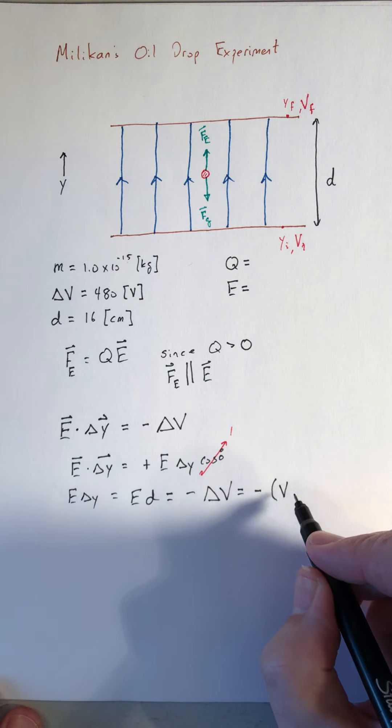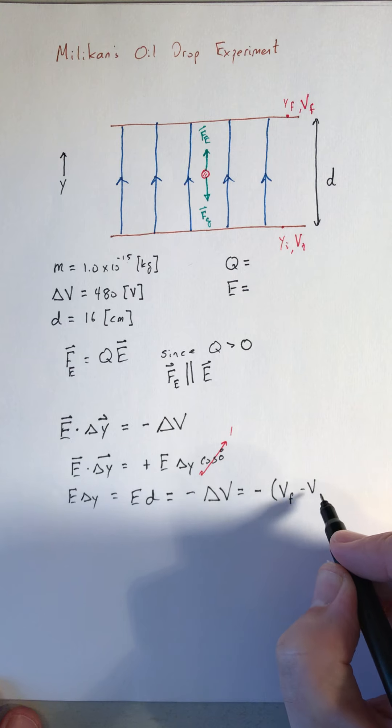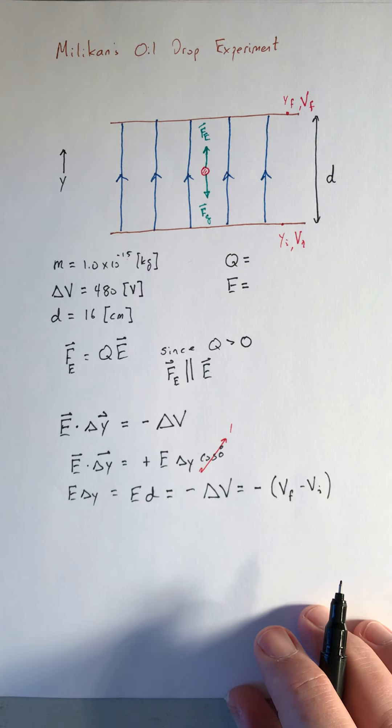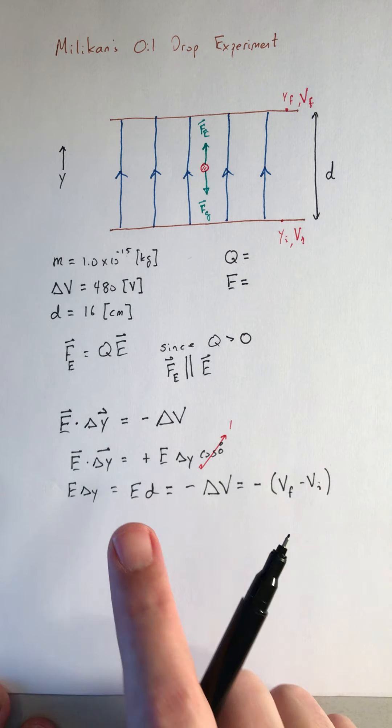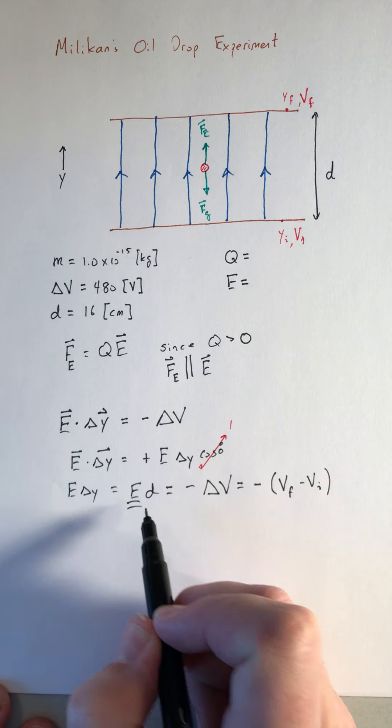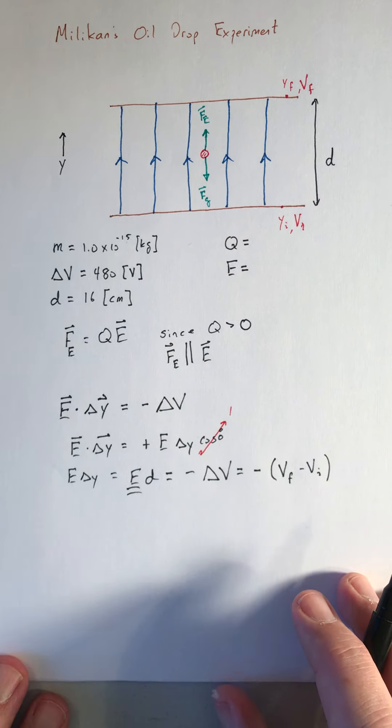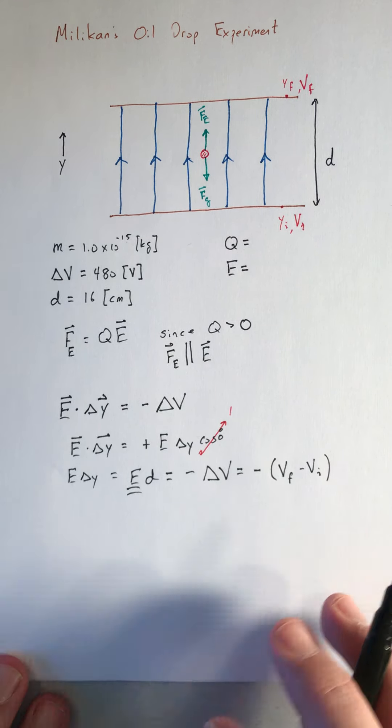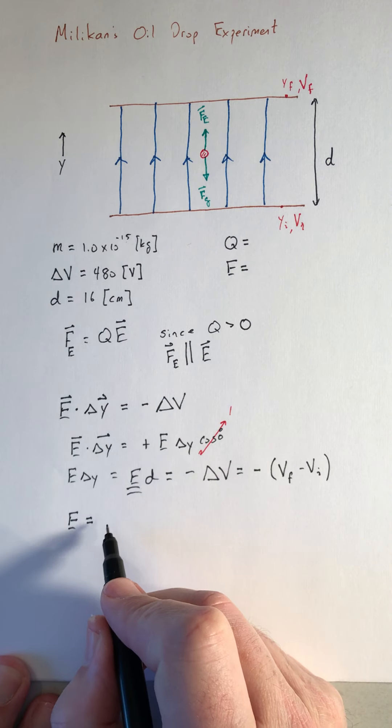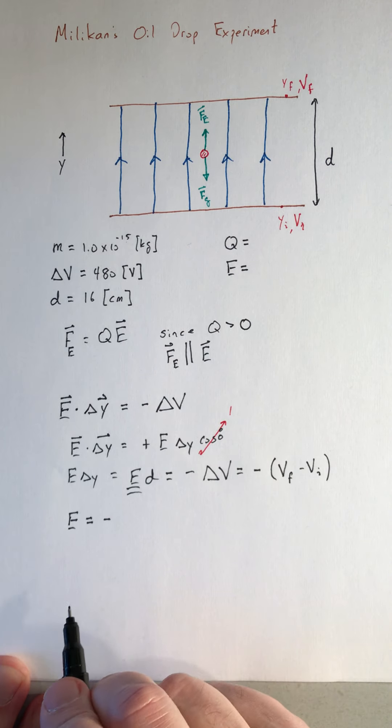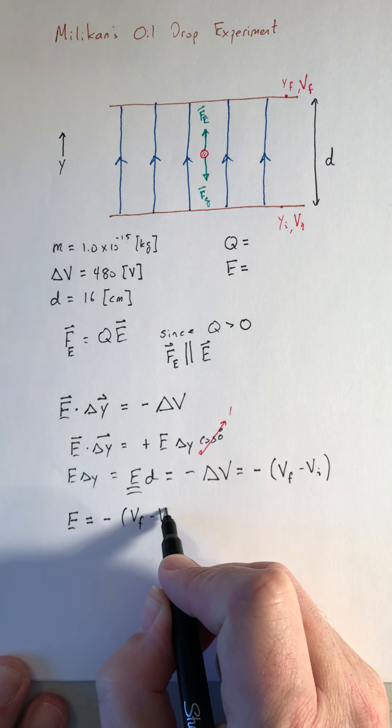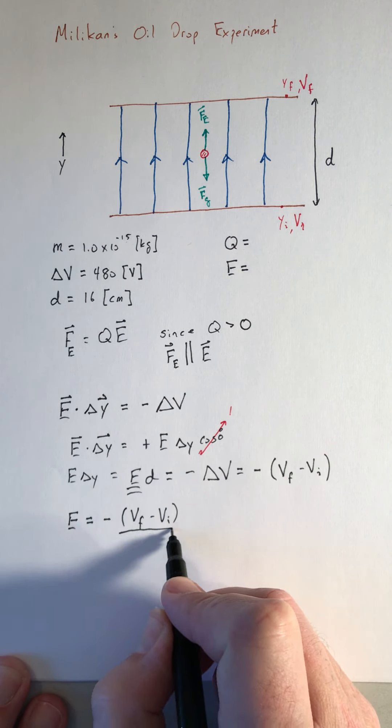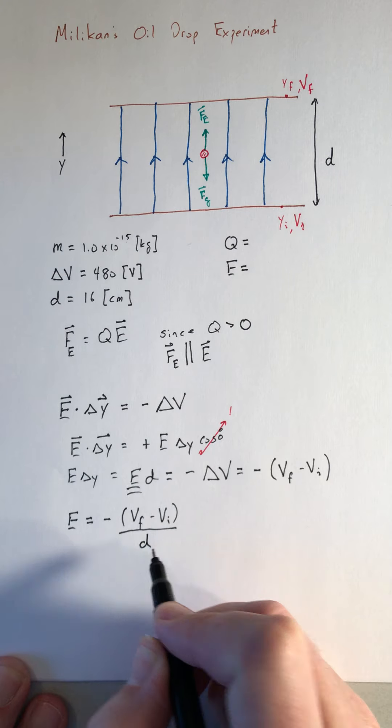Let me just try to write this out carefully. Delta something is V final minus the initial. So let me rearrange this. I want to solve for the electric field. E is going to be minus V final minus V initial over d.